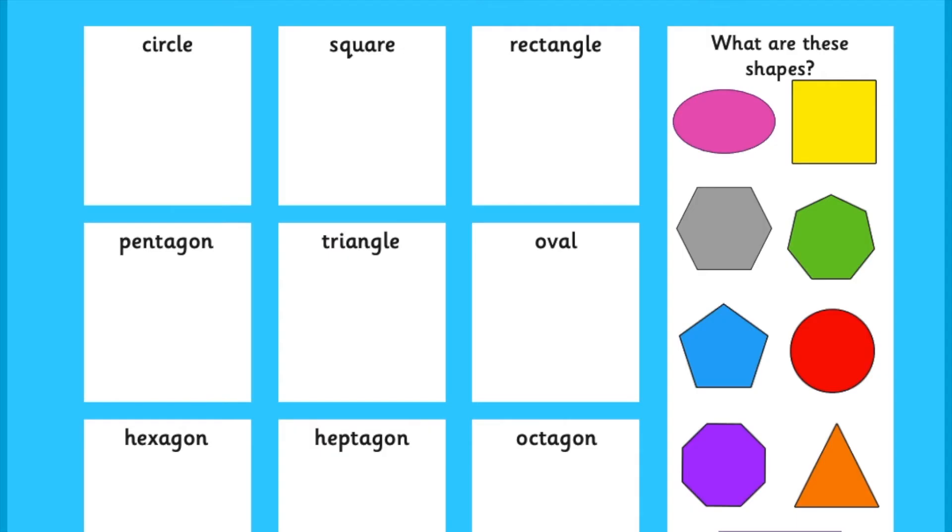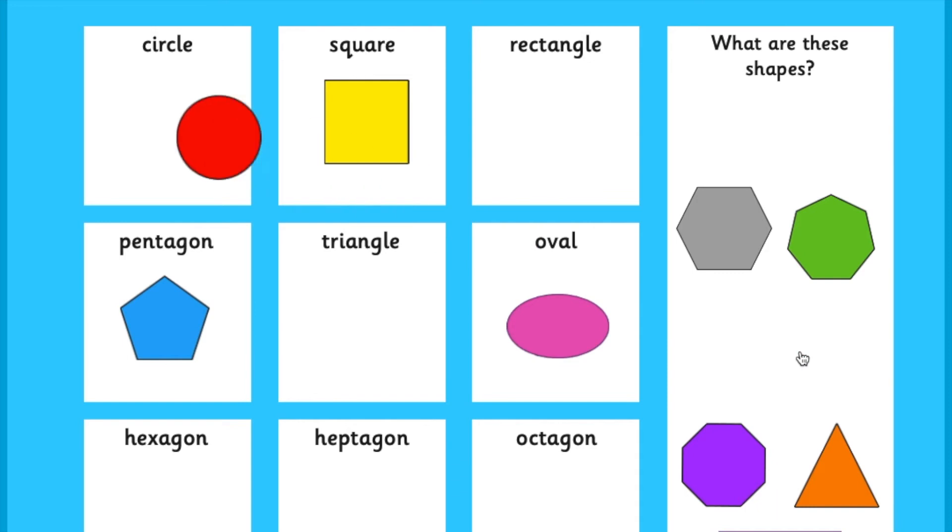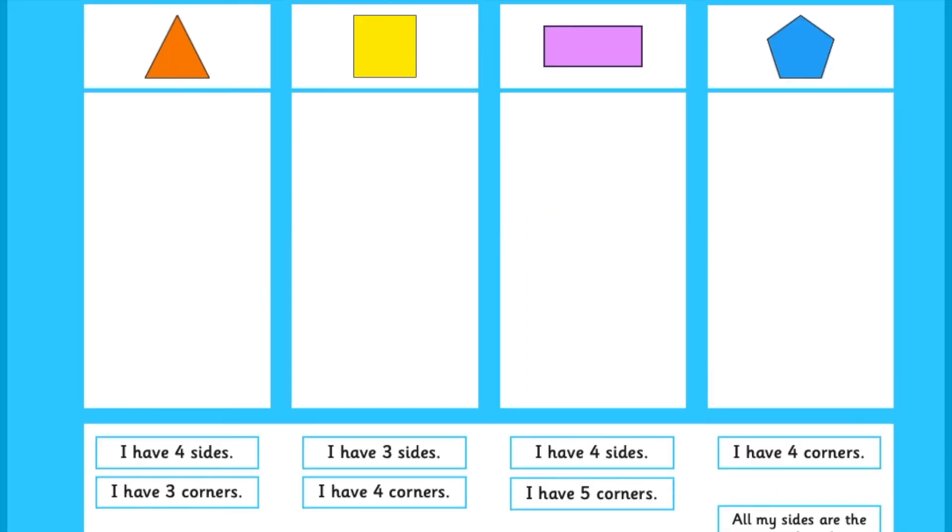This powerpoint is also interactive. You can click on the shape and it moves under the correct name. In this table you can click the fact and it will move under the right shape.